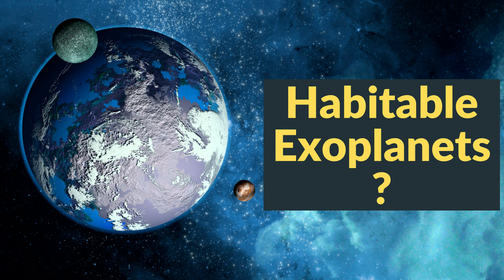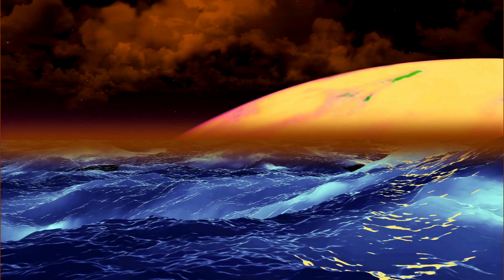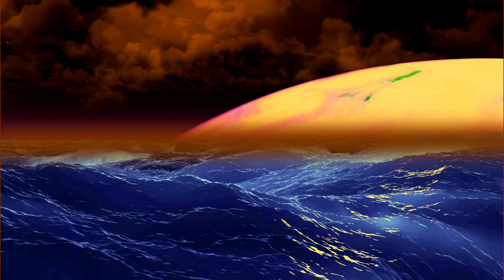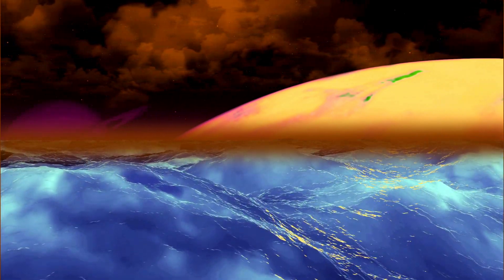What are habitable exoplanets? A habitable planet is one that has liquid water and can support life for a significant period of time.